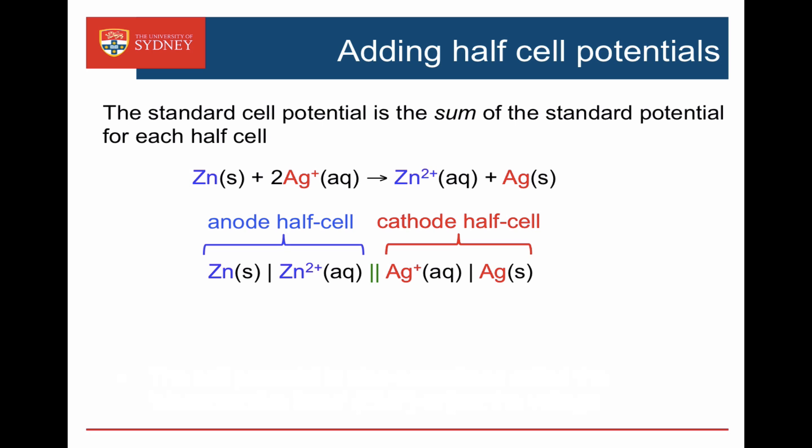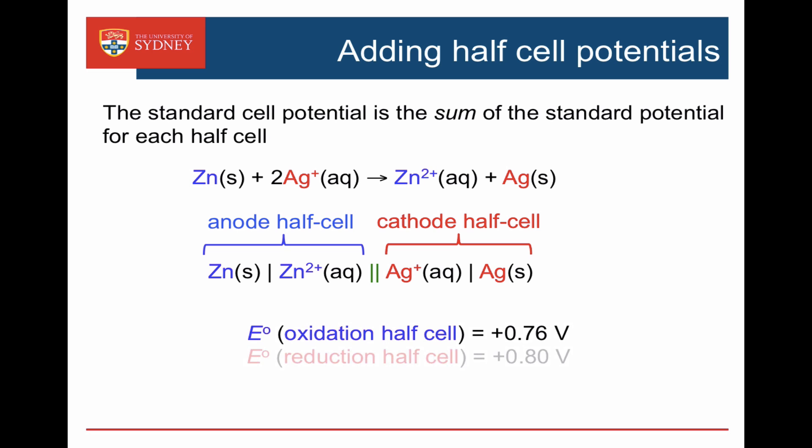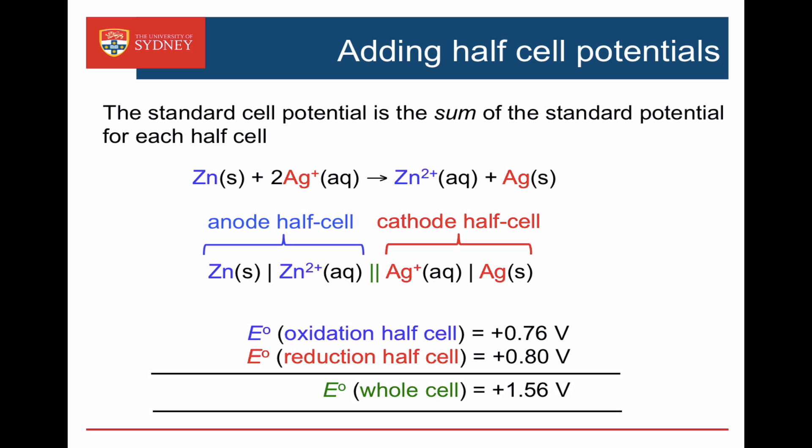The standard cell potential is the sum of the standard cell potentials for each of those half cells. Here I've got an oxidation half cell involving the zinc, which has an oxidation half cell potential of plus 0.76 volts, and I have a reduction half cell involving the silver and silver ions, with a reduction half cell potential of plus 0.8. Adding those two things together gives my experimental measurement of 1.56 volts.